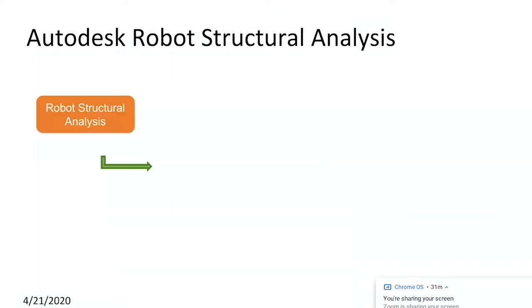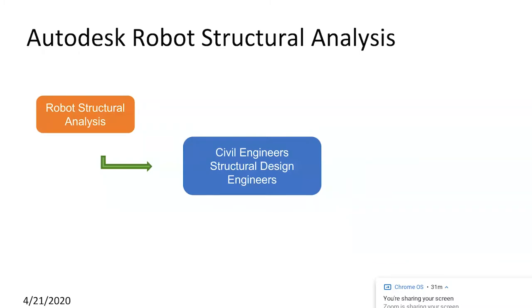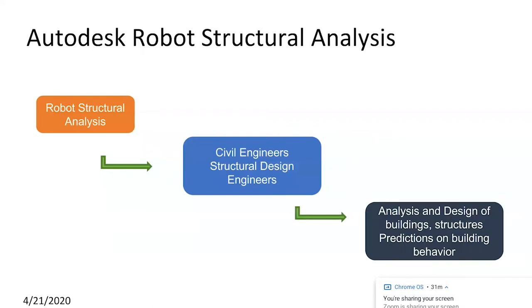Autodesk Robot Structural Analysis is a structural analysis tool most commonly used by civil engineers and structural design engineers. It helps analyze and predict building behavior — for example, for high-rise buildings you can transfer your Revit model to Robot Structural Analysis and make predictions on how the building behaves under applied loads, parameterizing those loads for better design judgment.